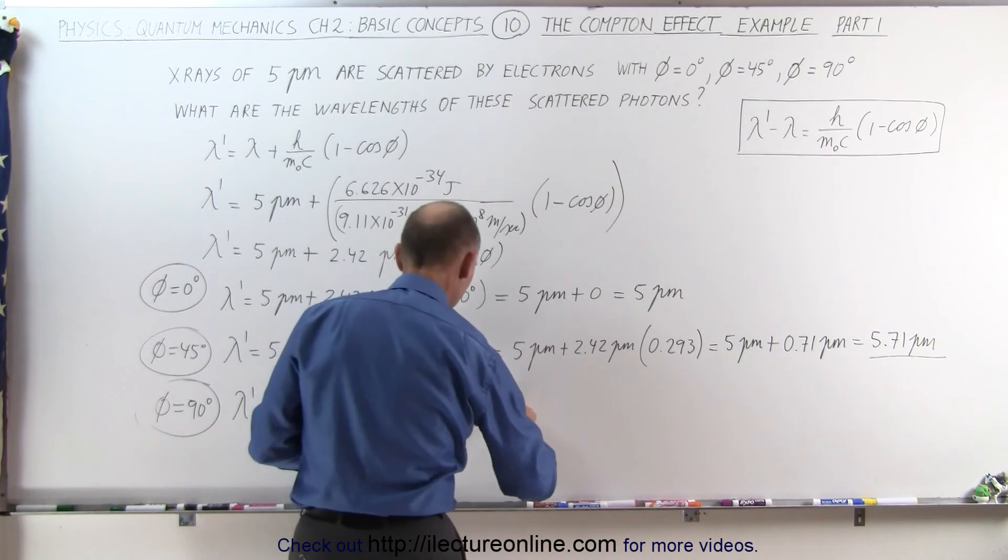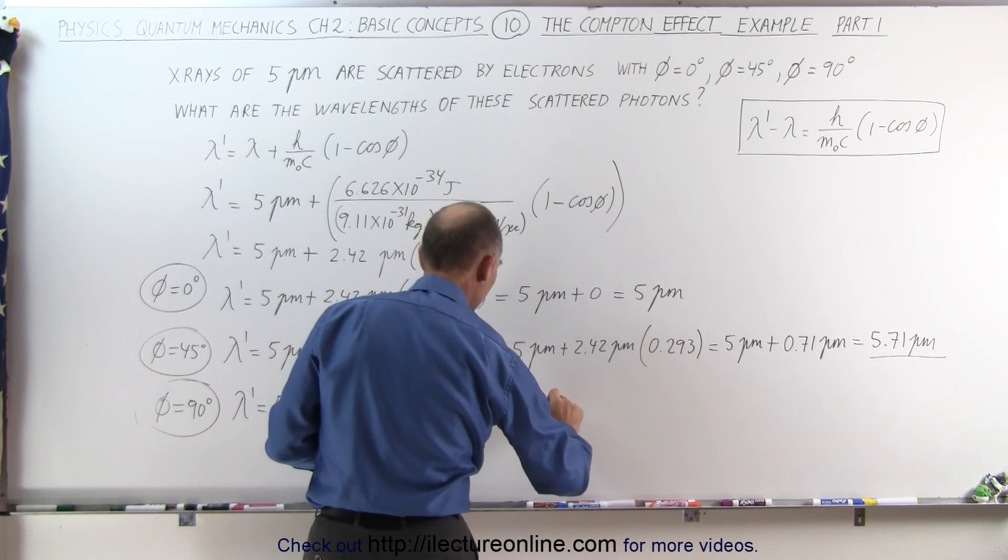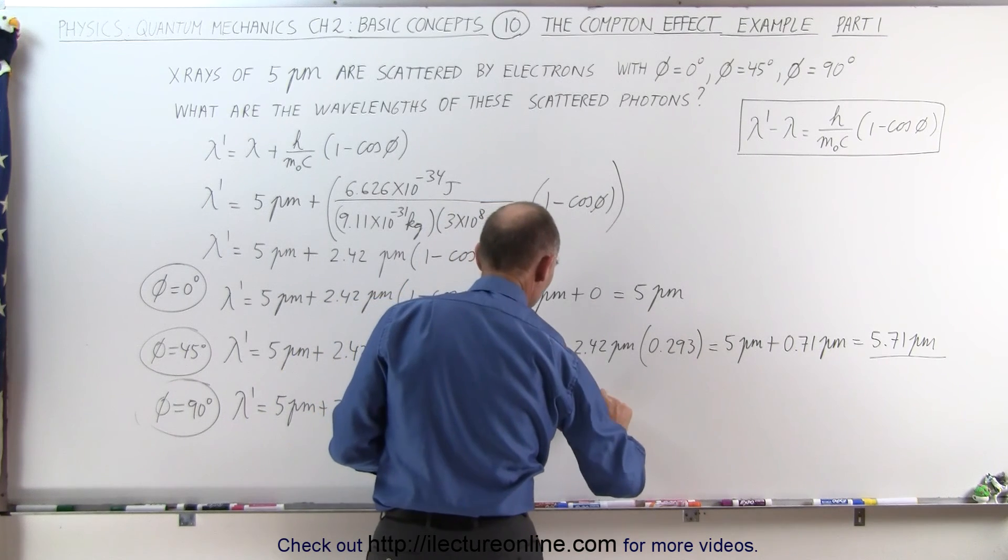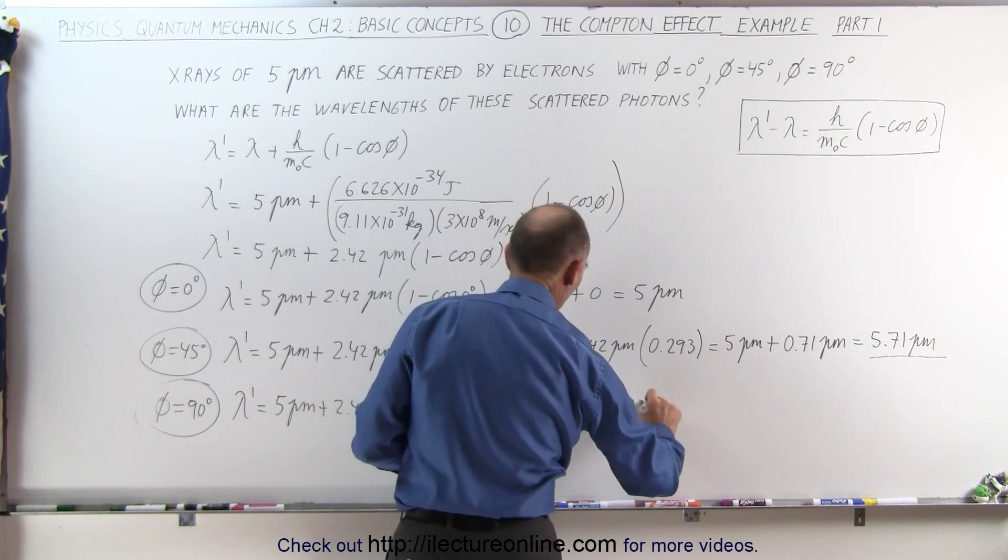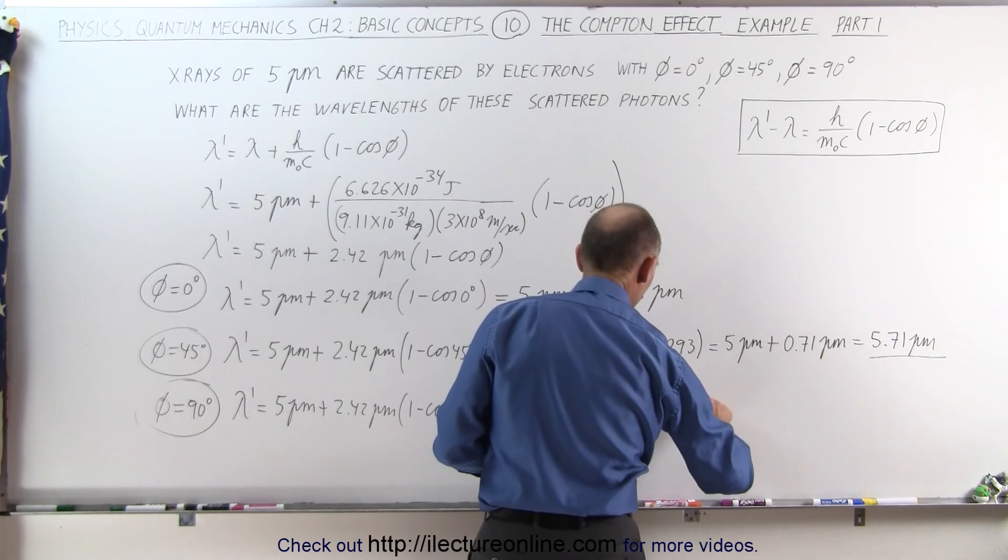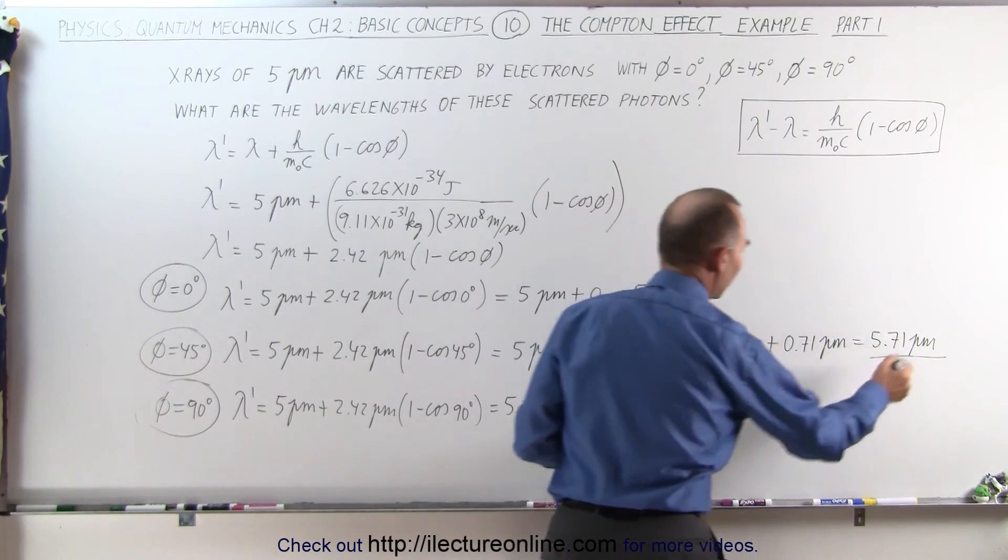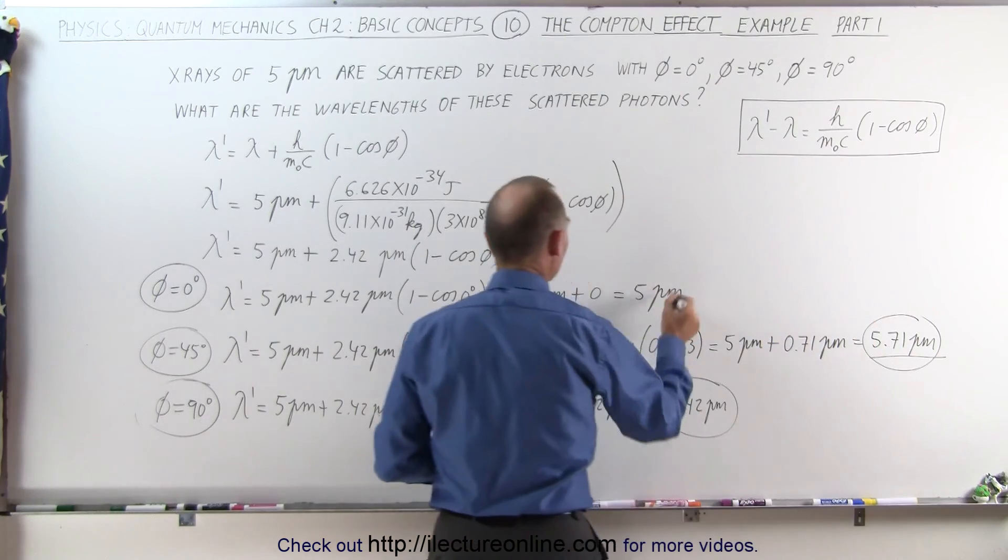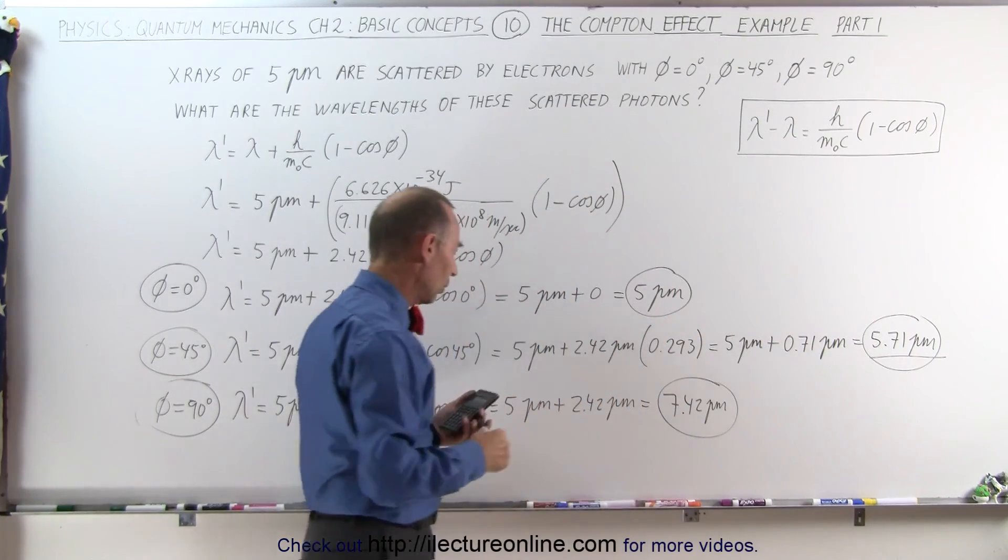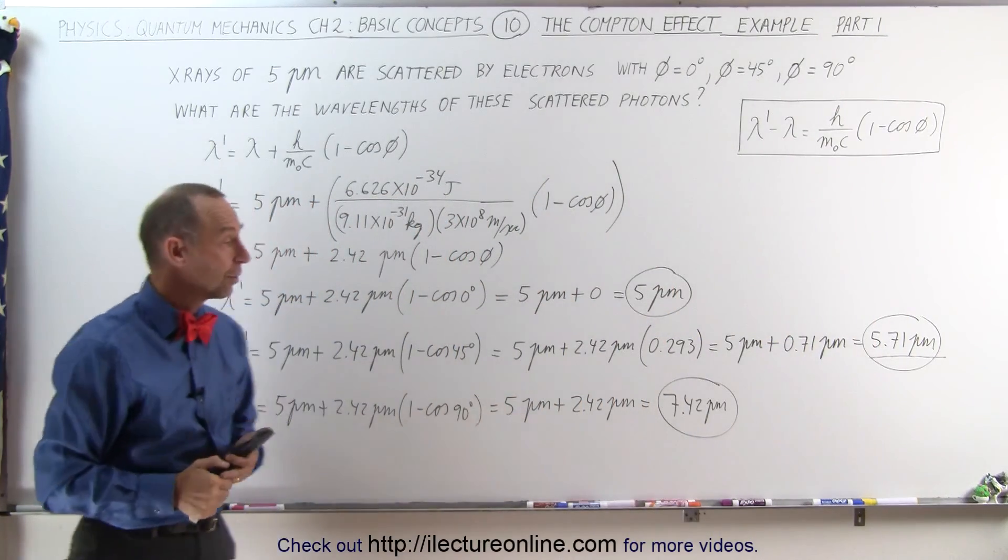That means it's 1 times this, 5 picometers plus 2.42 picometers or 7.42 picometers. Again a very significant change in the wavelength when the scattering angle is 90 degrees.